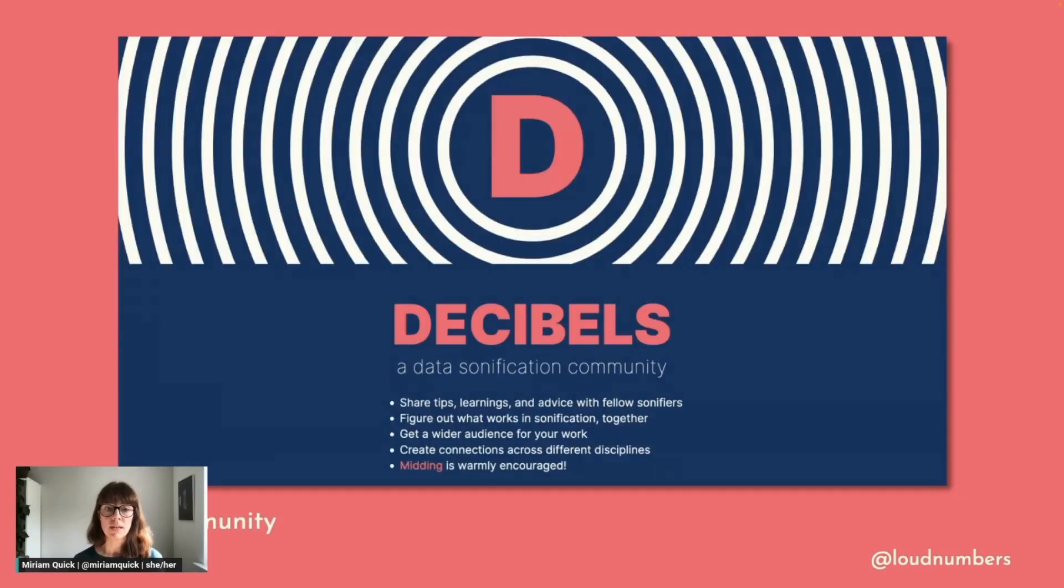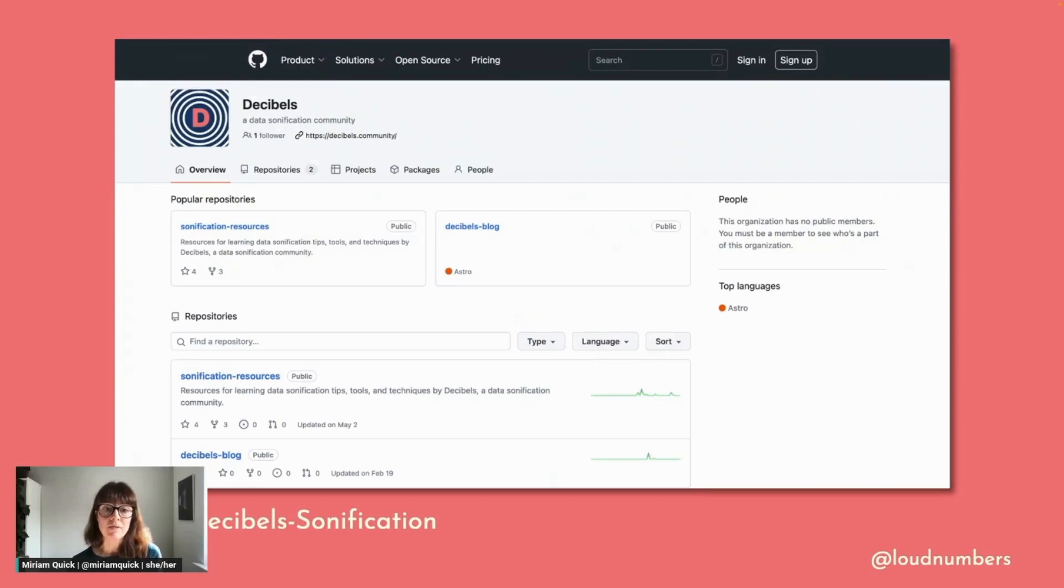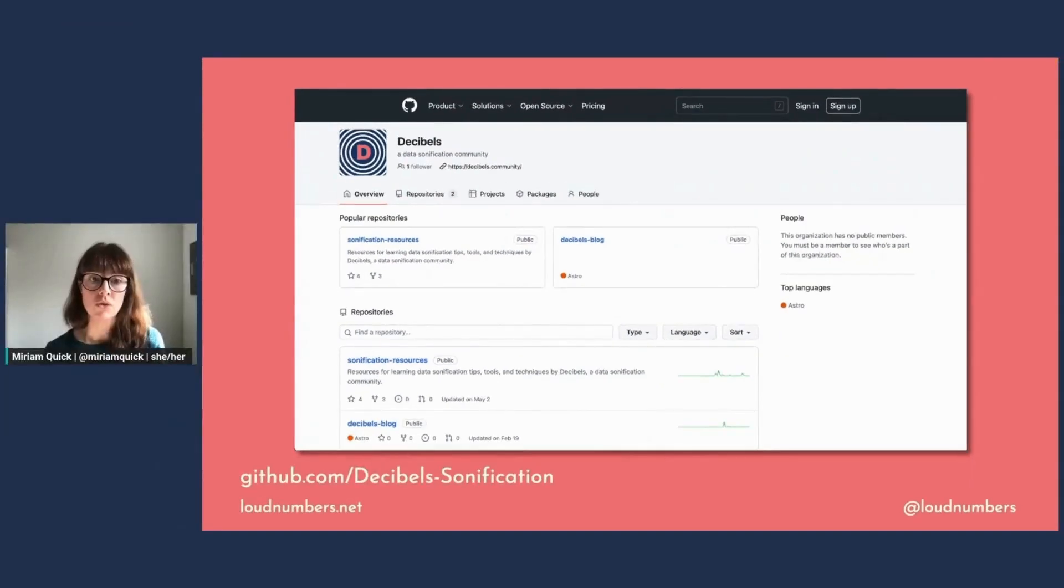If you want to find out more and connect with like-minded sonification enthusiasts, then you can join our Decibels community at decibels.community. Everyone is super friendly and everyone who joins says they don't feel qualified to be there. So if you don't feel qualified, then you'll be in great company. Decibels has lots of beginner resources, including a dedicated GitHub page with a super useful page called Sonification Resources on it. It's got tips and tools and techniques, including some code snippets for getting started with sonification in Sonic Pi. So do have a look.